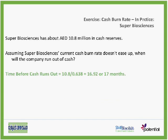SuperBioSanx has about $10.8 million in cash reserve that they have set aside. So assuming that SuperBioSanx's current cash burn rate does not ease up — they keep on spending $638,000 per month — when will the company run out of cash? The time before cash runs out: $10 million in reserve divided by $638,000 per month is around 17 months.